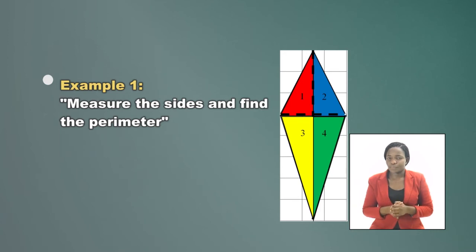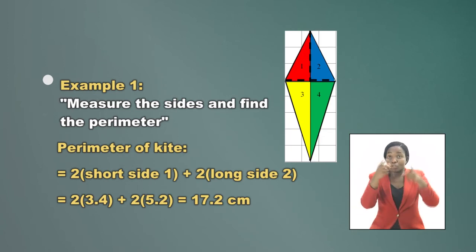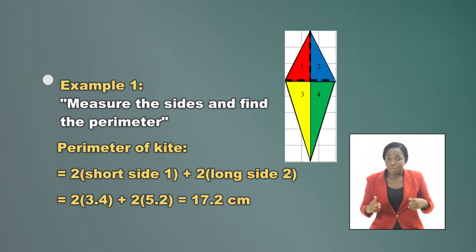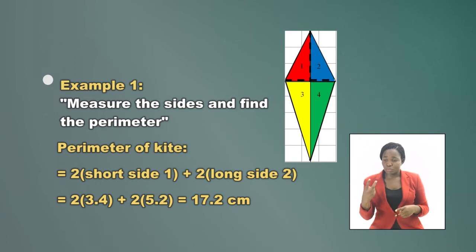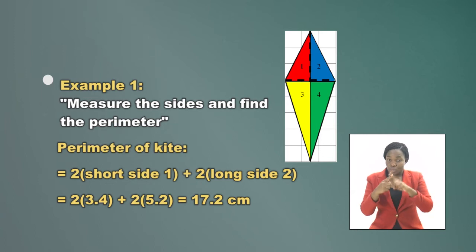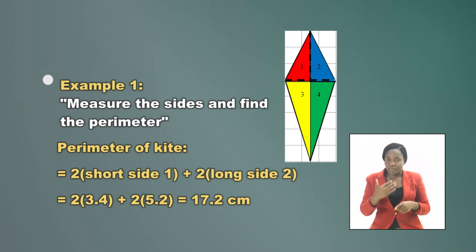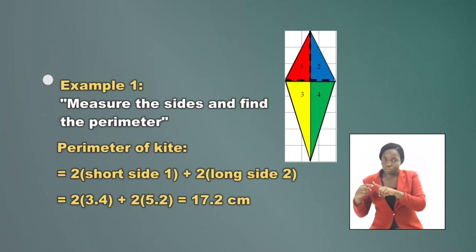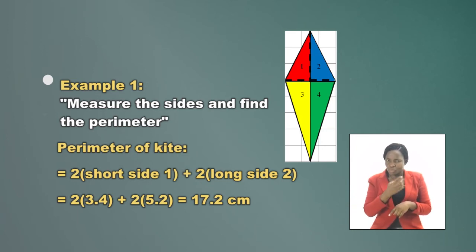Here is an example: measure the sides and find the perimeter. The short side is 3.4 cm and the long side is 5.2 cm. Applying the formula — two times the short side plus two times the long side — we add up two times 3.4 cm and two times 5.2 cm, giving us 17.2 cm.